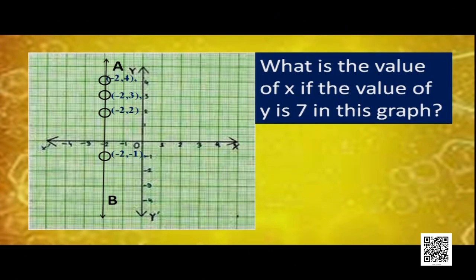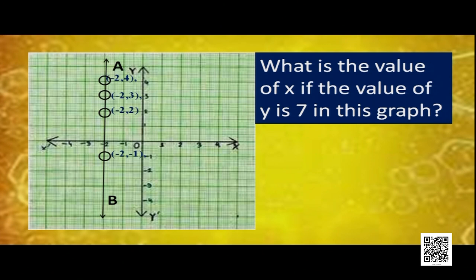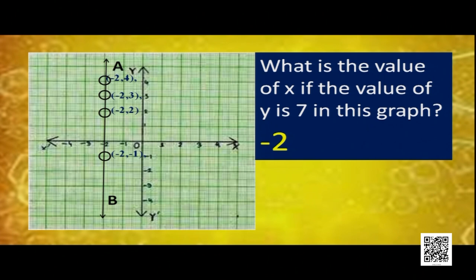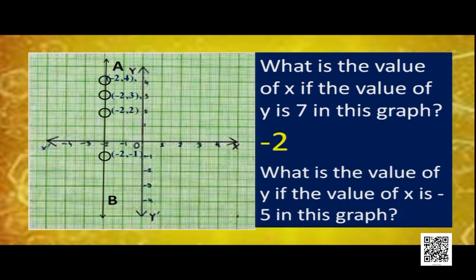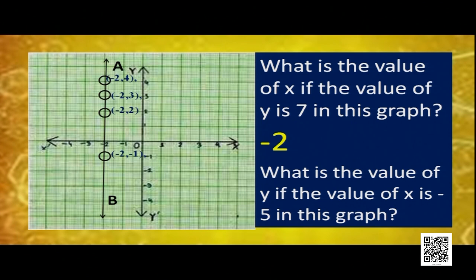What is the value of x if the value of y is 7 in this graph? As we learnt, in this case x will always be -2, so the value will be -2. And what is the value of y if the value of x is -5 in this graph? Again, we can say that there is no such value of y, as x is always -2 and x cannot be -5. So we cannot have such a value of y.